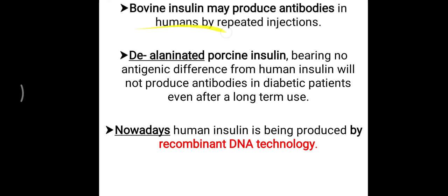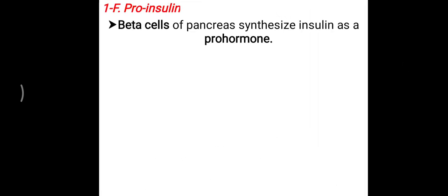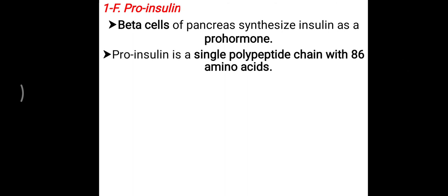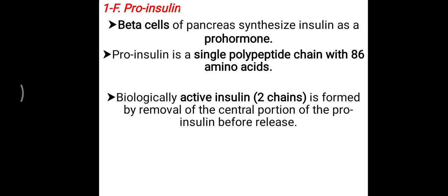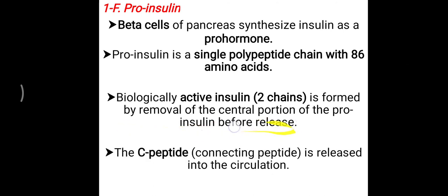Nowadays, bovine or porcine insulin is not used — human insulin is readily available with the help of recombinant DNA technology. Regarding pro-insulin: the beta cells of the pancreas synthesize insulin initially as a pro-hormone. Pro-insulin is a single polypeptide chain initially having 86 amino acids. Biologically active insulin — containing two chains, A and B — is formed by removal of the central portion of pro-insulin (the C-peptide) before release from the beta cell.